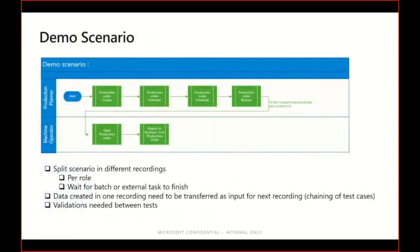For this demo I've created a simple test scenario. We're going to create a production order. Once created, the production planner would estimate, schedule, and release it. Then the manufacturing department picks it up and a machine operator starts the production order. In a typical scenario, he would register materials consumed and operation durations. For simplicity in this demo, I'm just going to start the production order and report it as finished immediately after.